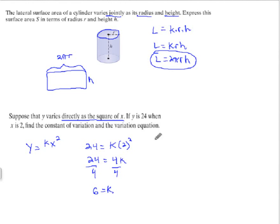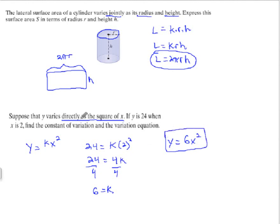The variation equation, then, would be y is equal to 6x squared. And that would be a joint variation, with x being the variable used two times.